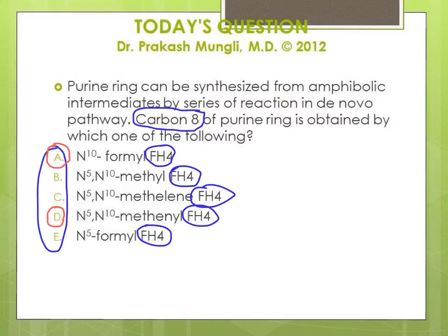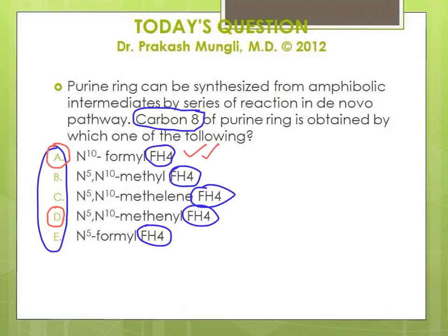Harper's textbook mentions N5N10-methanyl tetrahydrofolate as the carbon 8 donor. However, going with the majority — most reference books in biochemistry and research articles favor N10-formyl tetrahydrofolate as the donor of carbon 8 and carbon 2 in the purine ring. So I'll go with option A, N10-formyl tetrahydrofolate, as the answer for the carbon 8 donor.